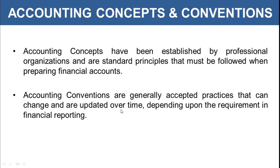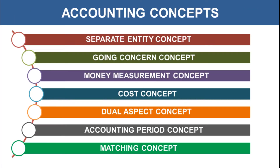Now that we understand the difference between accounting concepts and conventions, let's look at what concepts and conventions are followed in our accounting system. The accounting concepts are: separate entity concept, going concern concept, money measurement concept, cost concept, dual aspect concept, accounting period concept, and matching concept.